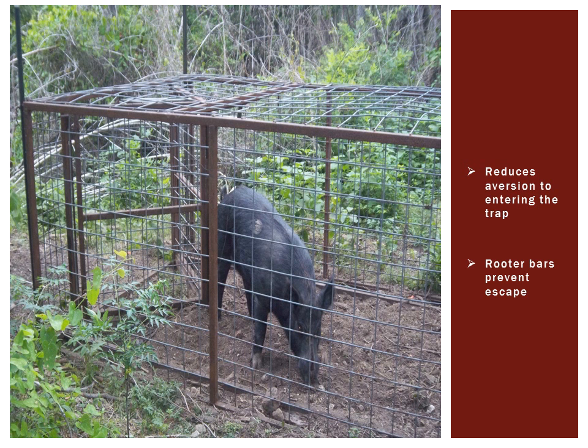Removing the floor from the trap gives it a more natural look and feel to the hogs. The installation of rooter bars spaced six inches from the side and running the length of the trap prevents the hogs from escaping by digging out from beneath the trap.